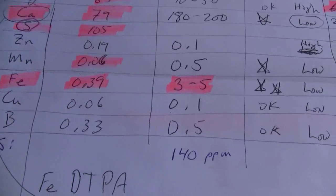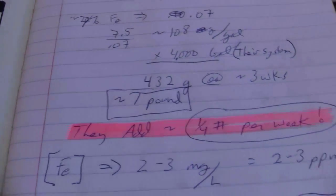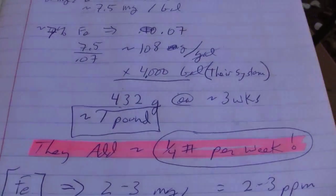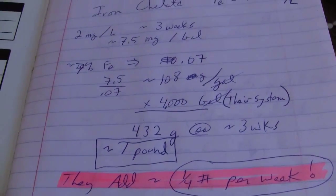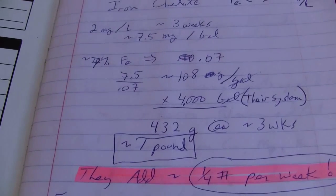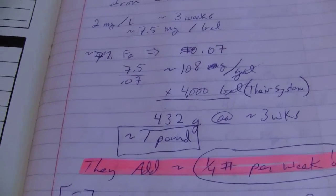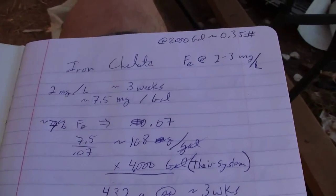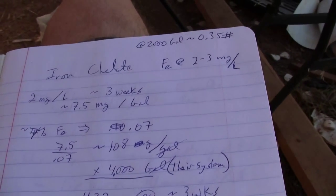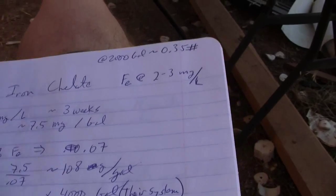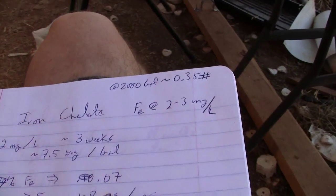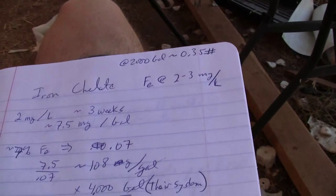Different people say different things as far as what the concentration ought to be, but for lettuce it's in the 3 to 5 parts per million. Seems like a lot of people mention those same numbers. This reading was 2 to 3 milligrams per liter, 2 to 3 parts per million.